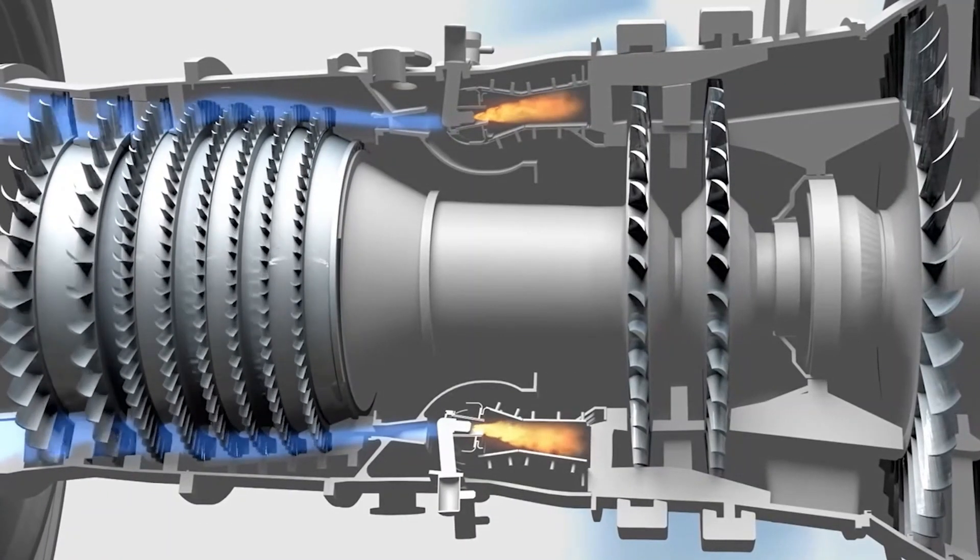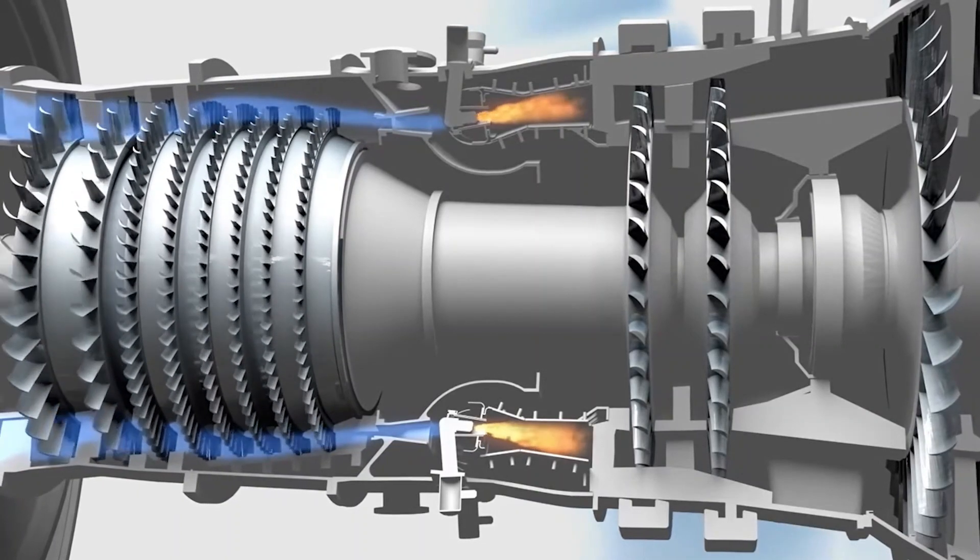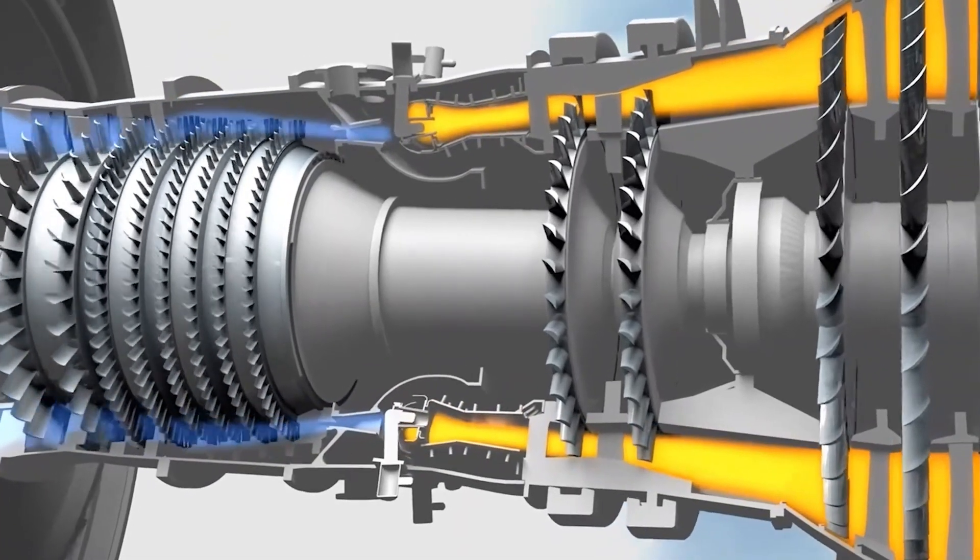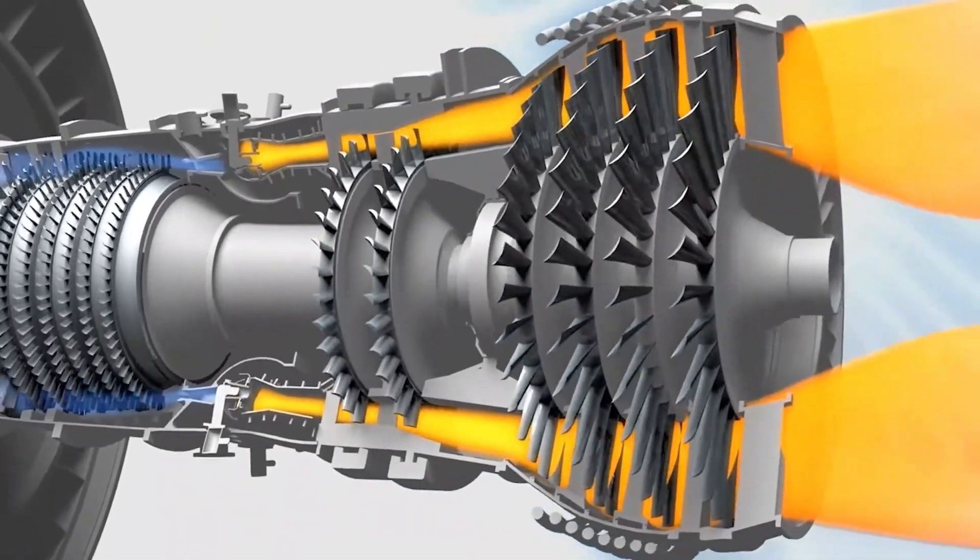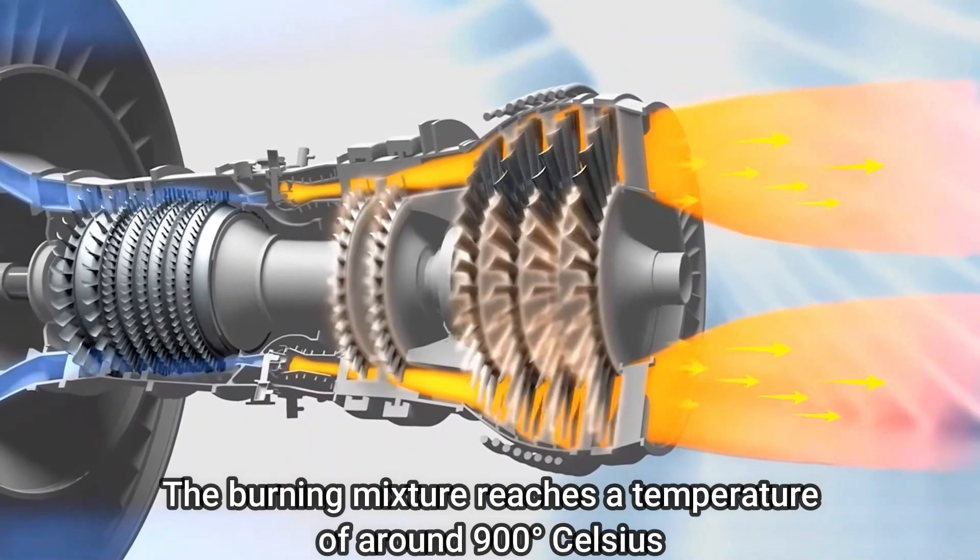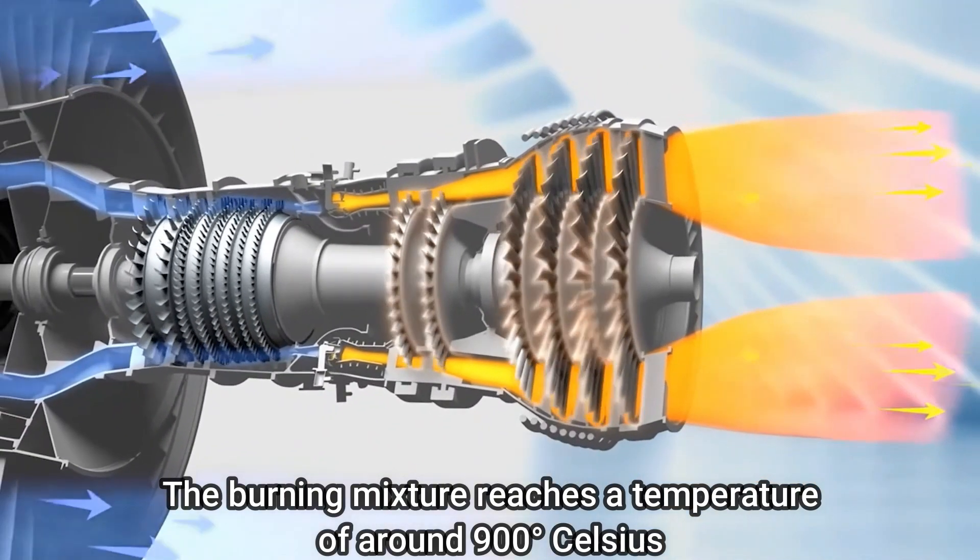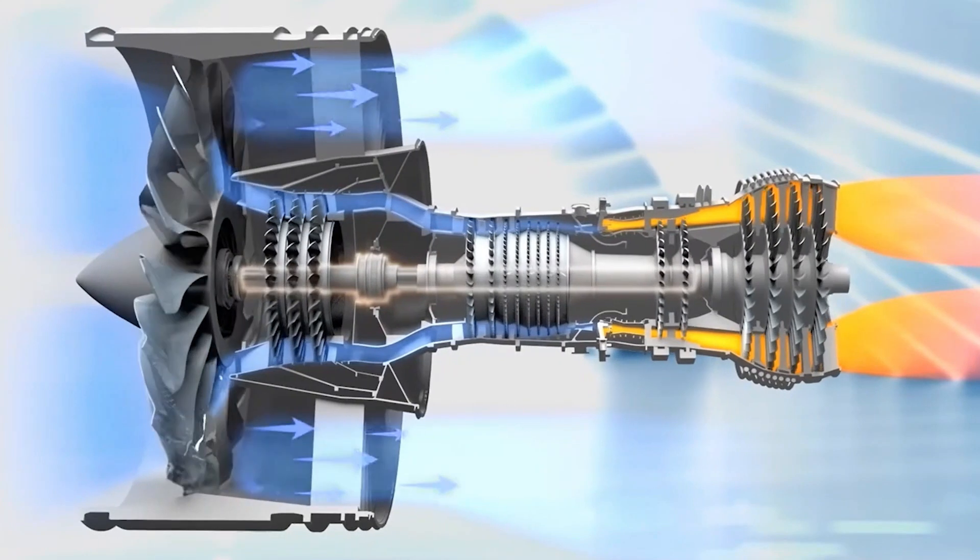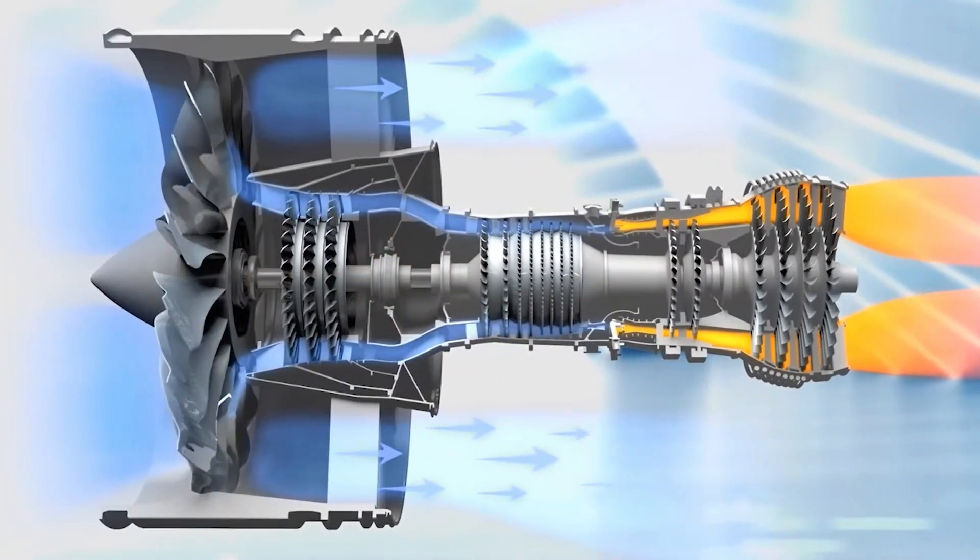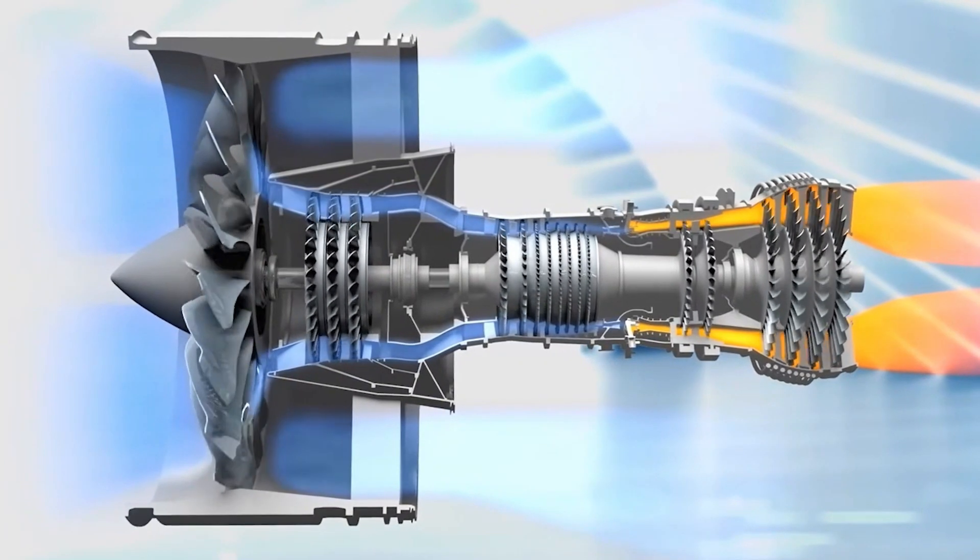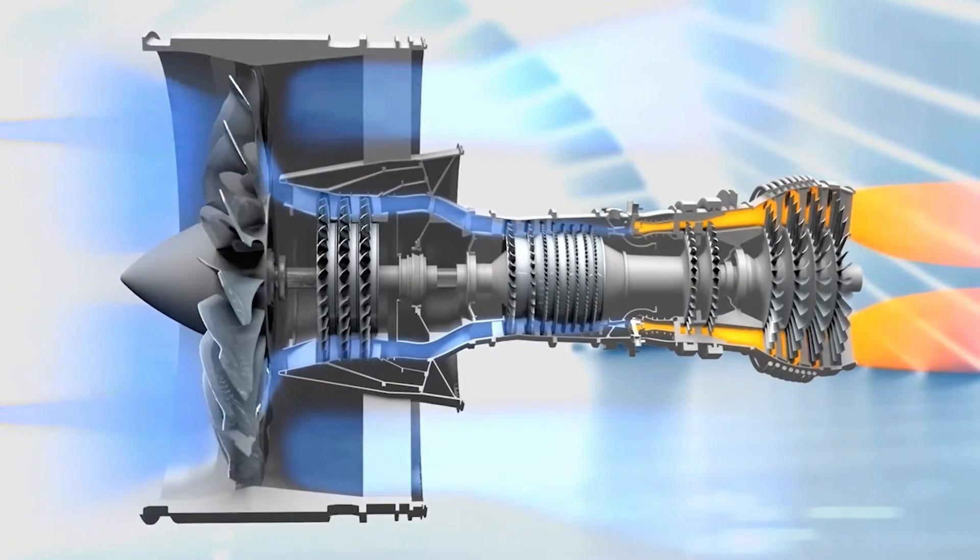Number three: In the combustion chamber, just behind the compressor, the kerosene mixes with the compressed air and burns fiercely, giving off hot exhaust gases and producing a huge increase in temperature. The burning mixture reaches a temperature of around 900 degrees Celsius. Number four: The exhaust gases rush past a set of turbine blades, spinning them like a windmill. Since the turbine gains energy, the gases must lose the same amount of energy, and they do so by cooling down slightly and losing pressure.